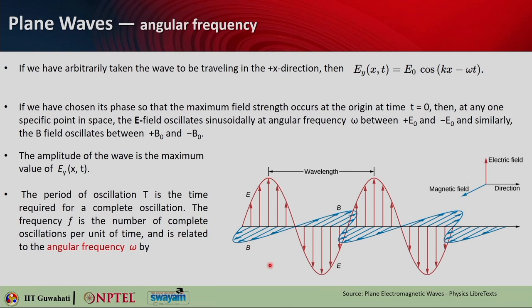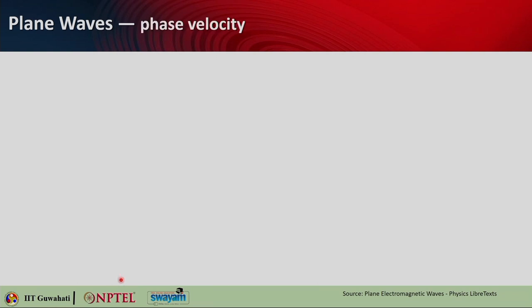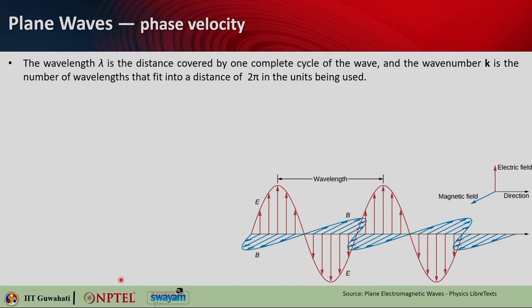The period of oscillation T is the time taken for one complete oscillation. Once T is known, the frequency f equals one over T — the number of complete oscillations per unit time. The angular frequency omega equals 2 pi f, which can also be written as 2 pi over T. These are the fundamental relationships between wave vector, angular frequency, period, and frequency.